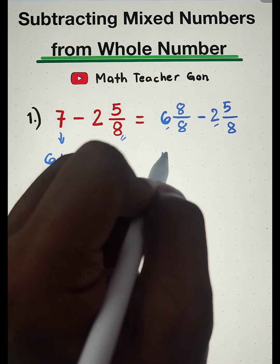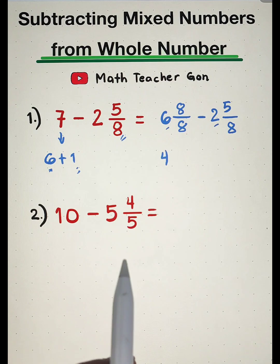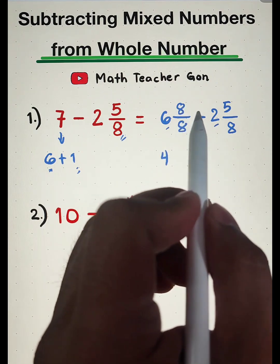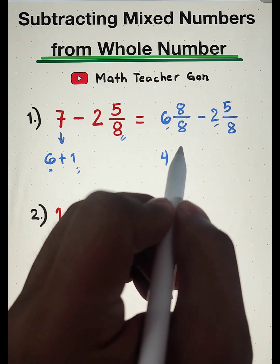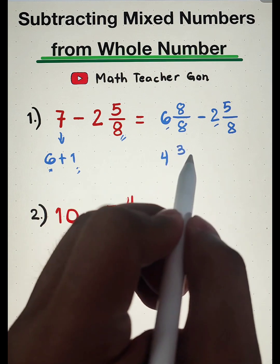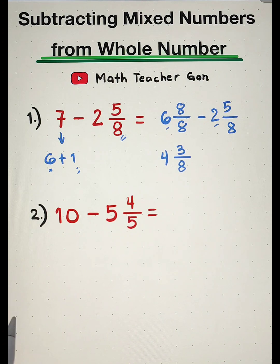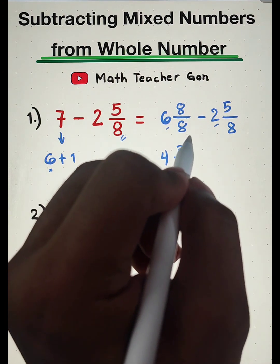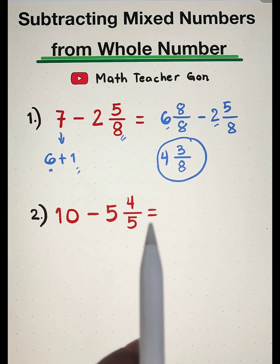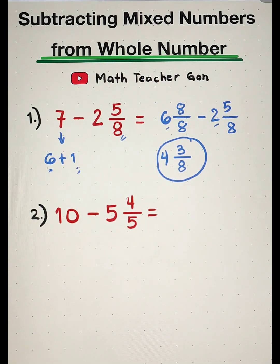And then for the numerator, we have 8 minus 5, that is equal to 3 over, copy your similar denominator, which is equal to 8. And this is now the answer, 4 and 3 over 8.